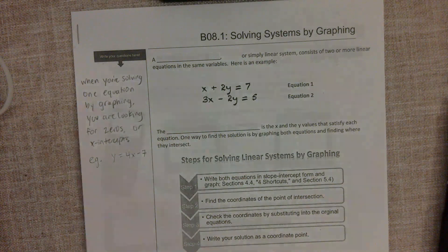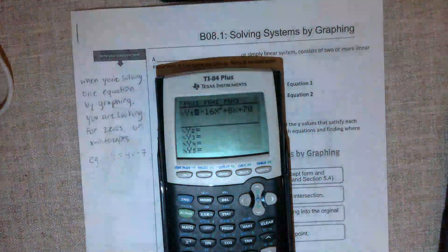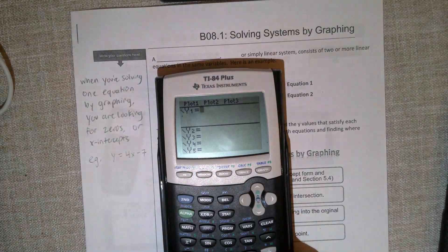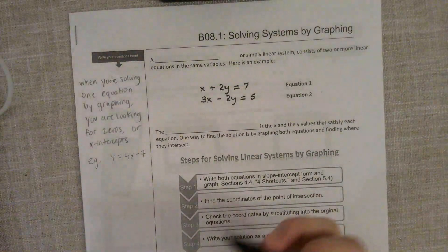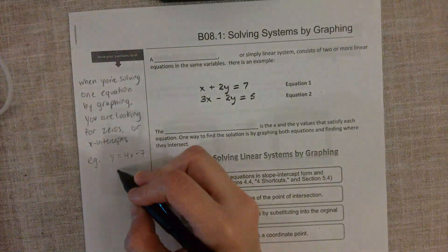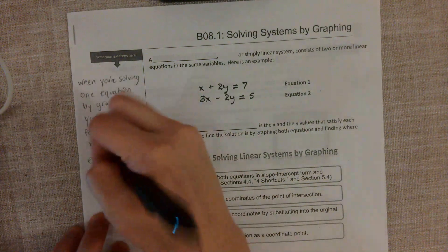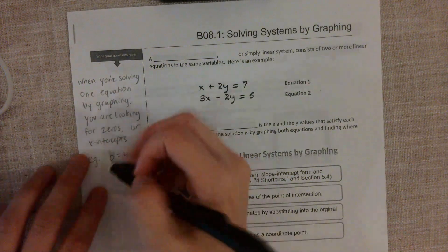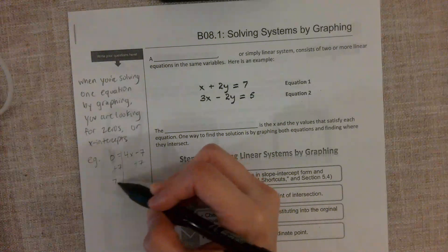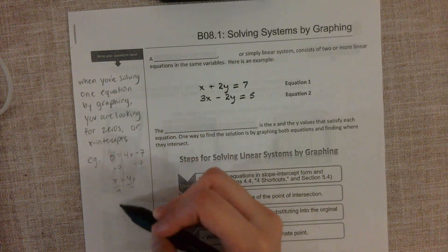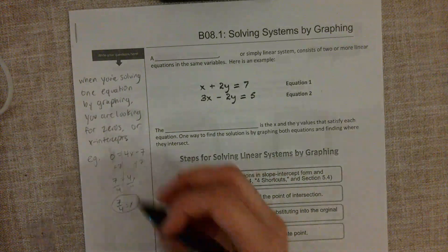If I put this in my graphing calculator, I have 4x minus 7. Let's solve it first. We're going to set it equal to zero, so we have zero equals 4x minus 7. We add 7 to both sides, then we divide by 4. So we get 7 over 4 equals x. So if I was looking for the solution to this equation, it would be 7 over 4.